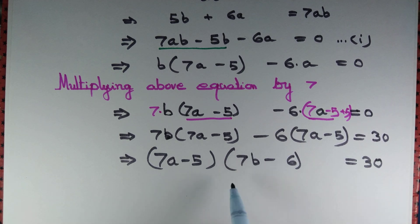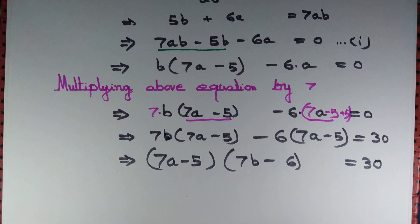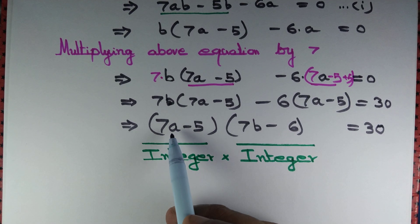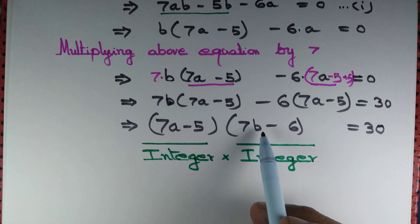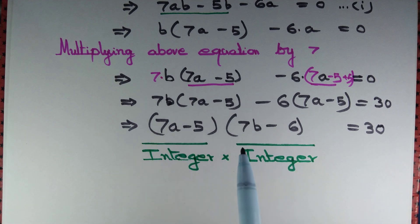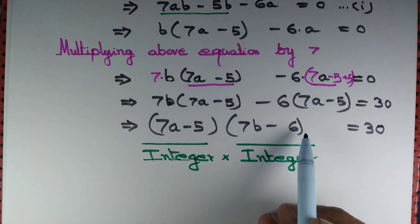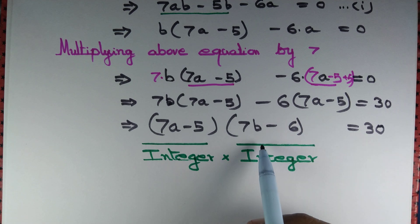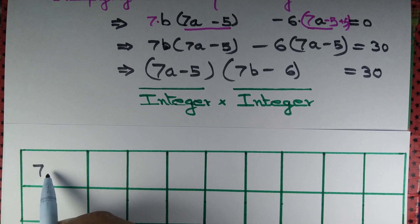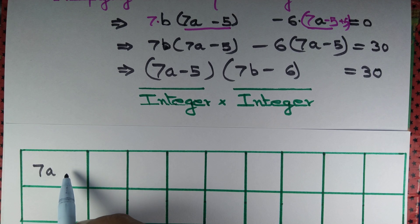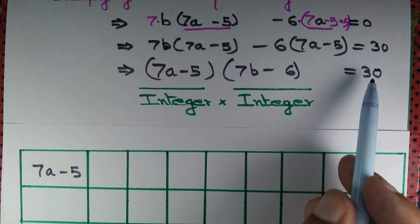We see that the product of two numbers equals 30, and both are integers. Since a and b are integers, 7a - 5 and 7b - 6 are also integers. So their product equals 30, meaning 7a - 5 must be a factor of 30 and 7b - 6 must also be a factor of 30.